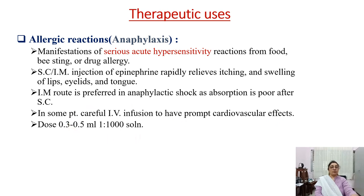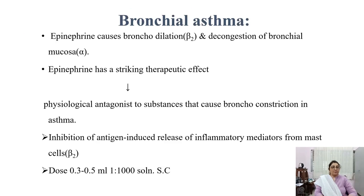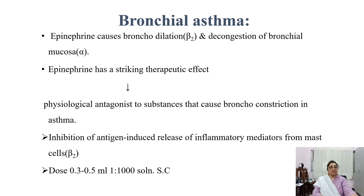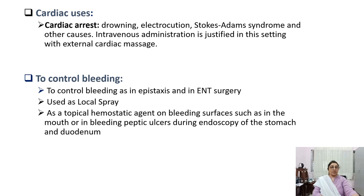Dose in anaphylaxis: 0.3–0.5 ml of 1:1000 solution. In bronchial asthma, epinephrine causes bronchodilation via beta-2 receptors and decongestion of bronchial mucosa via alpha receptors. Epinephrine has a striking therapeutic effect due to physiological antagonism of substances released during bronchoconstriction; it also inhibits antigen-induced release of inflammatory mediators via beta-2 receptors. Dose: 0.3–0.5 ml of 1:1000 solution subcutaneously. Cardiac uses: in cardiac arrest from drowning, electrocution, stroke, or other causes, intravenous administration is justified with external cardiac massage.